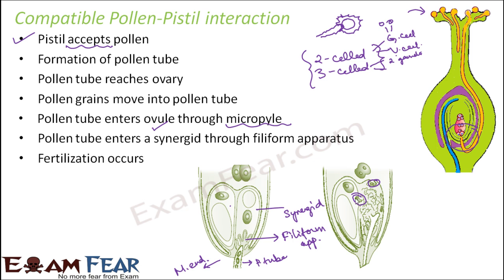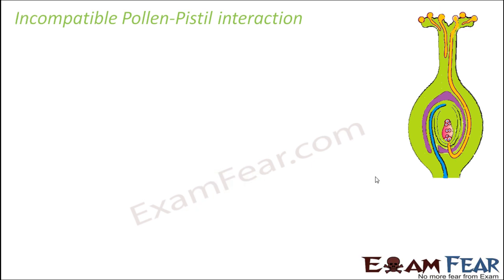The male gametes are now released. There is one egg cell — the female gamete — and another polar nucleus which also acts as a female gamete. One fertilization takes place between one male gamete and the egg cell, and another fertilization takes place between the second male gamete and the polar nuclei. Two fusions occur, and that is why it is called double fertilization. This is how fertilization takes place when the pollen-pistil interaction is compatible.